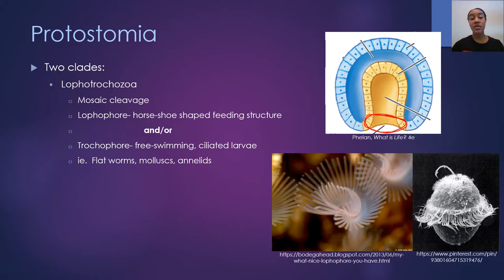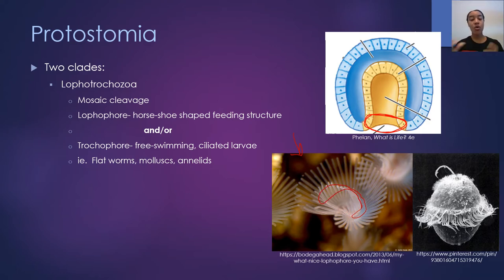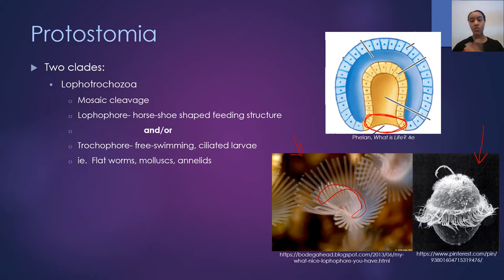The first characteristic is they may have a lophophore, which is a horseshoe-shaped feeding structure. If you look at these tentacle-like structures in this organism, they go around a kind of base plate in a U shape — that horseshoe-shaped structure is the lophophore. Or they may have a trochophore, which is a free-swimming, ciliated larval form. They must have at least one of these two things. We'll talk more about this in the next slide.